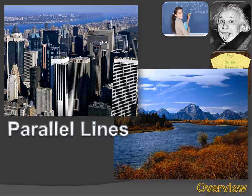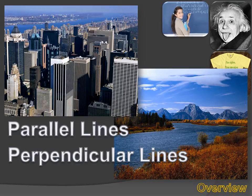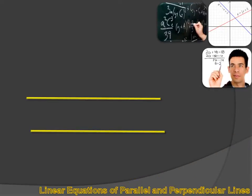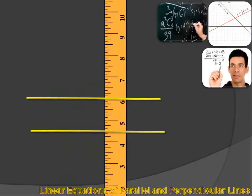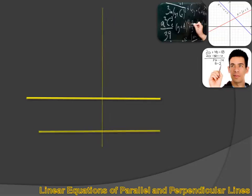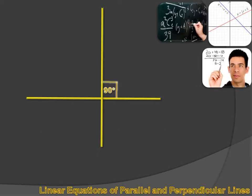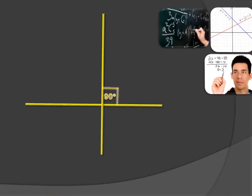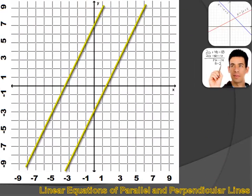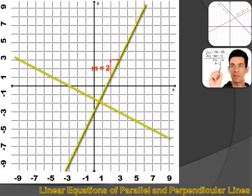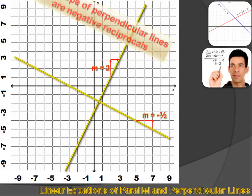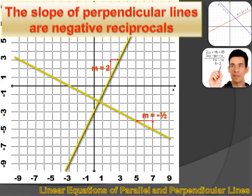We're going to look at parallel lines and perpendicular lines. I'm pretty sure you know what parallel and perpendicular mean, but we're going to review it real quickly. These two lines are parallel, and that means they're always the same distance apart. These two lines are perpendicular, and that means there's a 90-degree or right angle between them. Parallel lines are going to have the same slope, and perpendicular lines have slopes that are the negative reciprocal of each other.